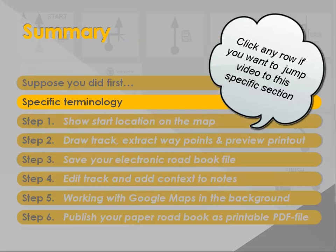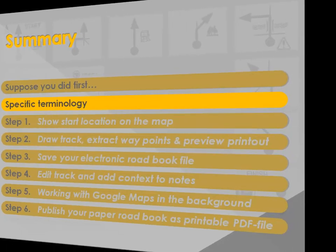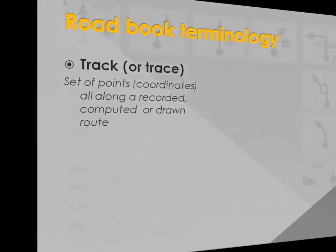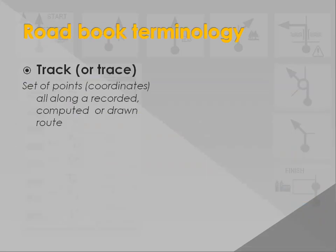Let's define some key terms used in our system. The track is a collection of points — actually geographical coordinates — all along a route.